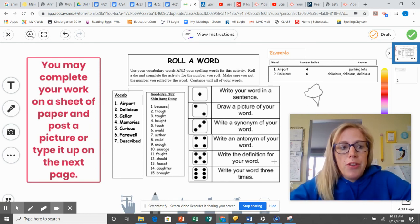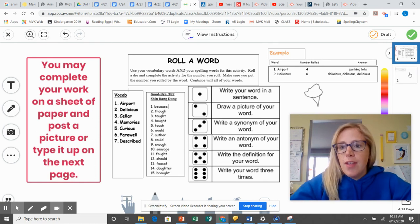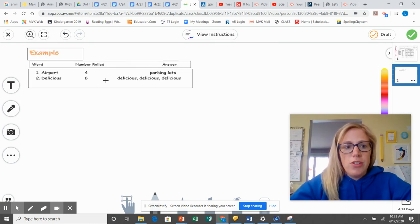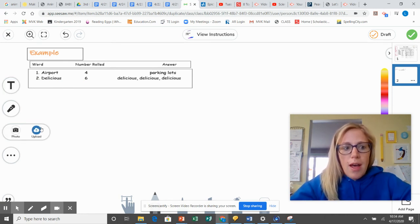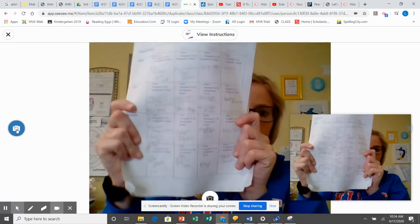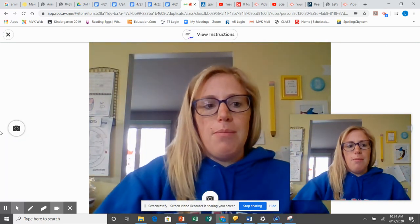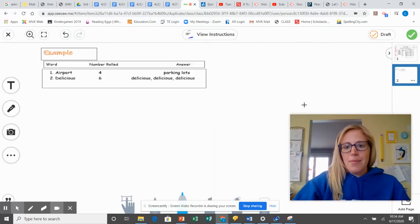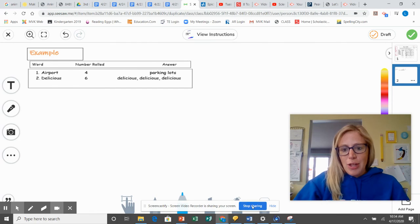So make sure if you do it on a separate sheet of paper, you take a picture of it. And then on this next page, if you choose to do a picture, you click that camera and you upload that picture, or you just take it right there, click the photo, see a bunch of me, take a picture of it and post it. If you have any questions, let me know.